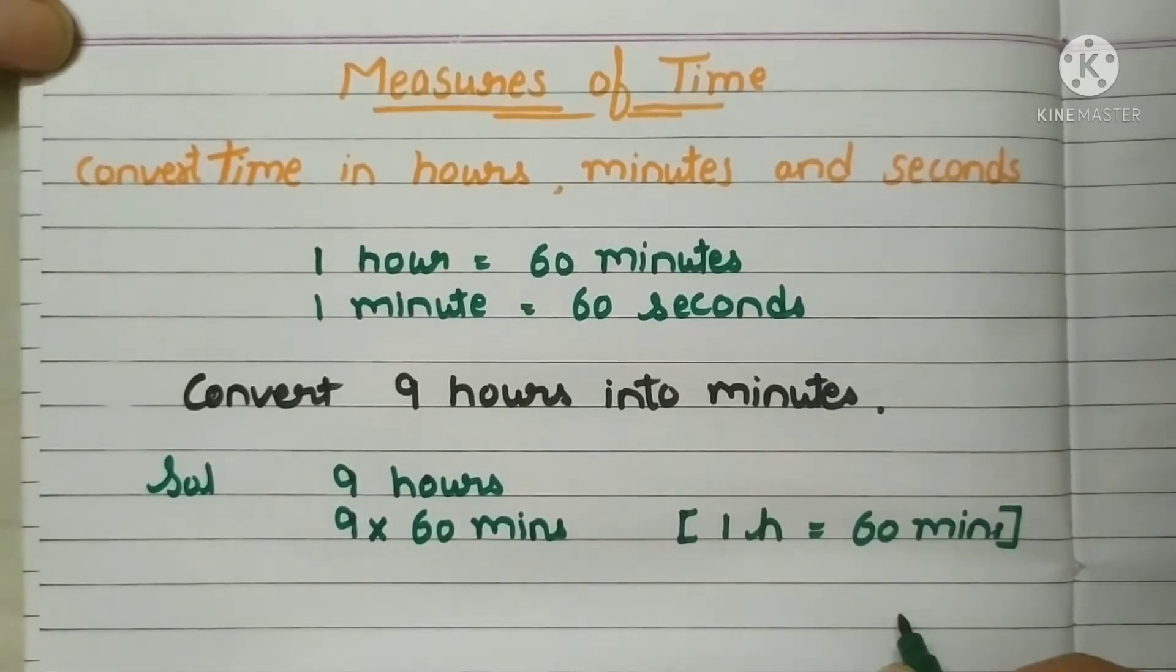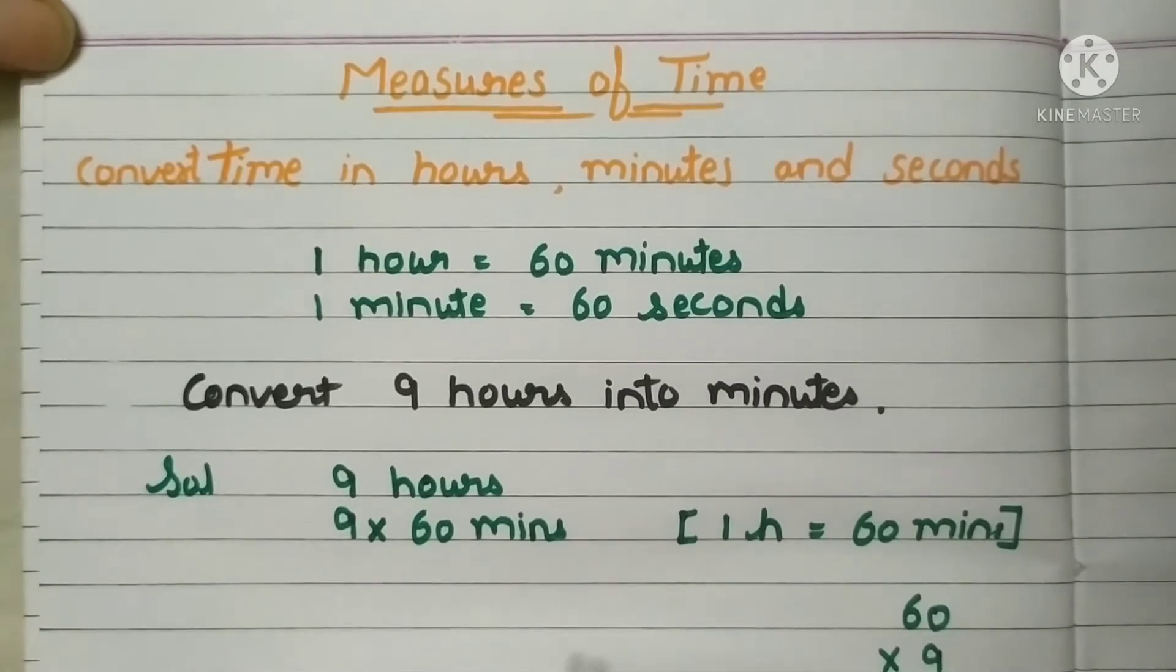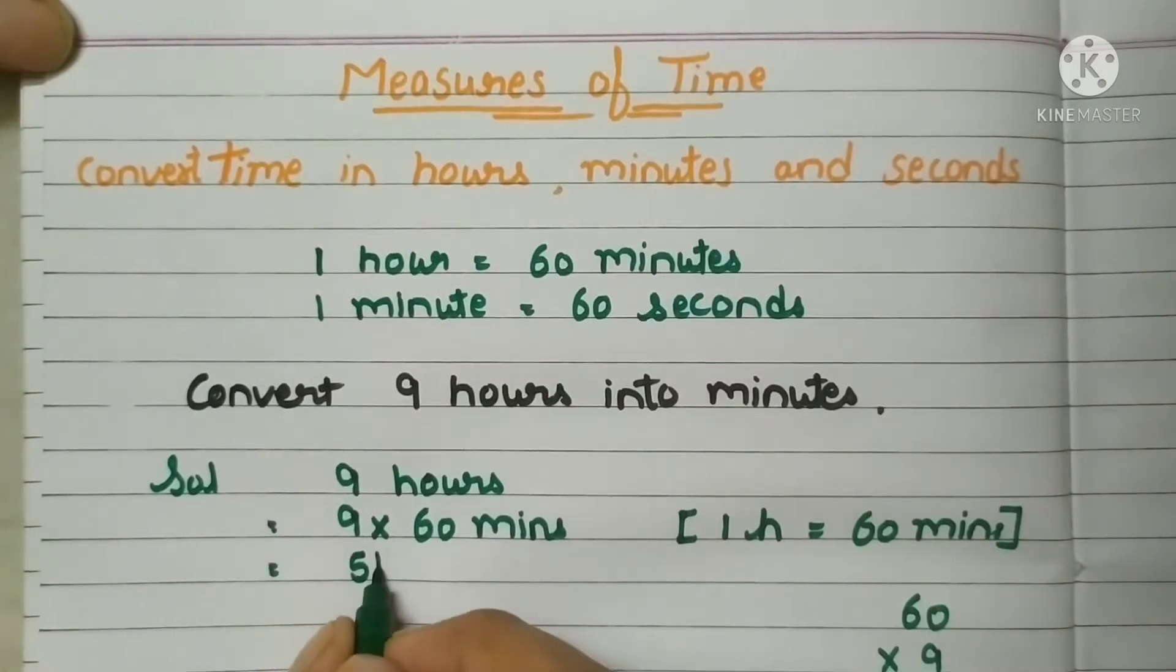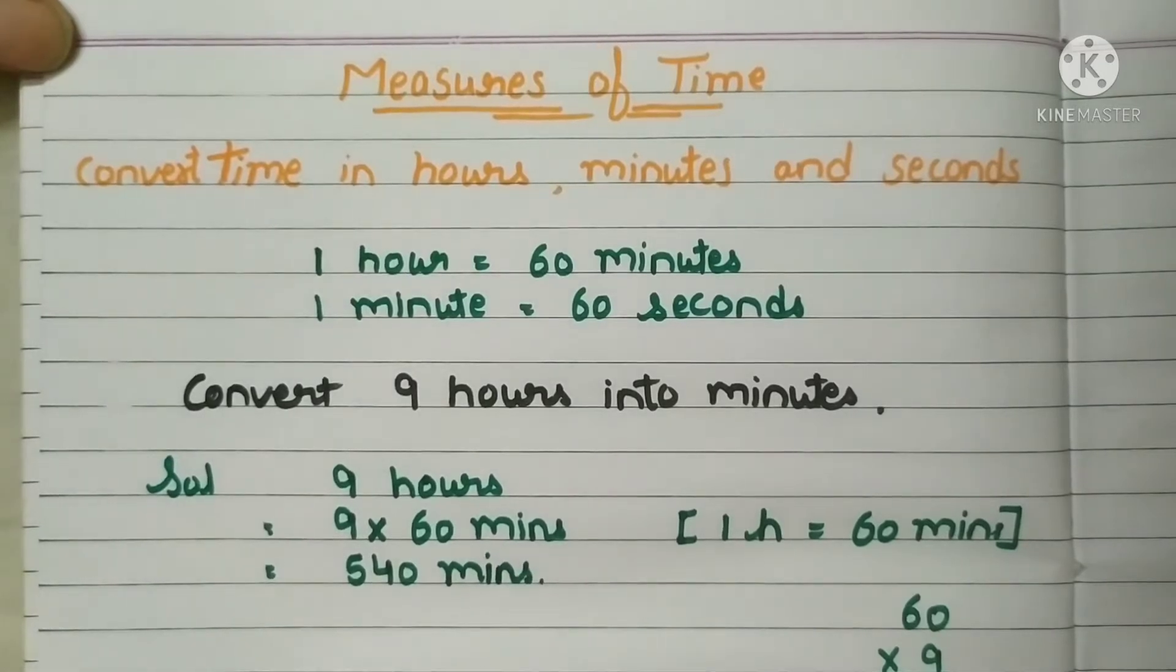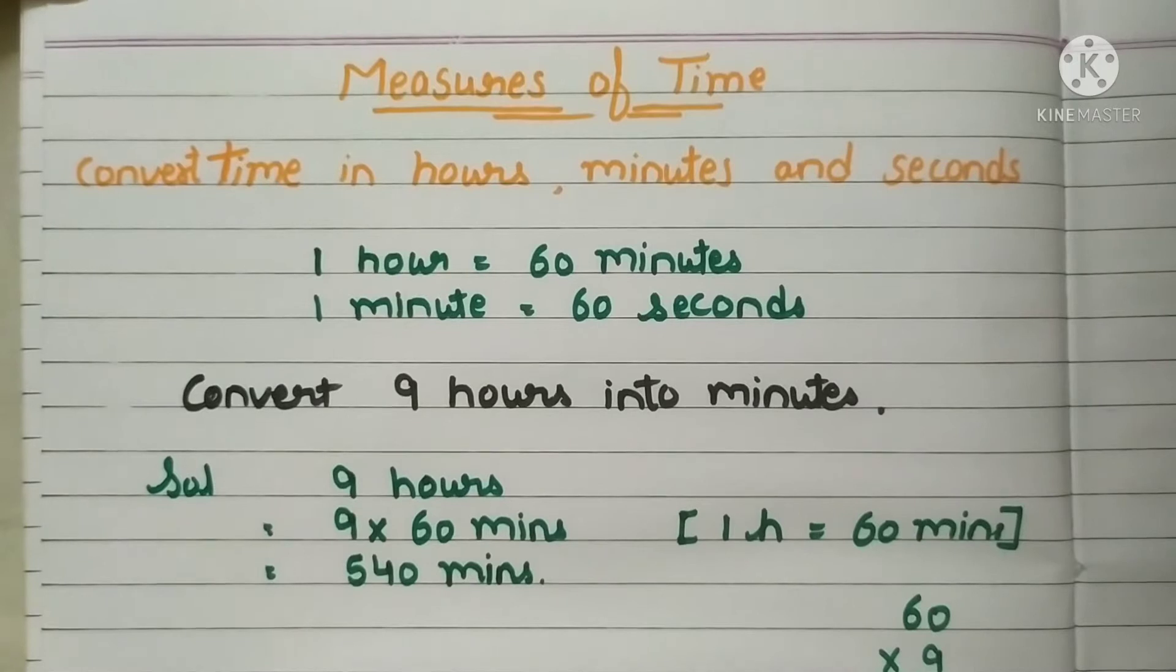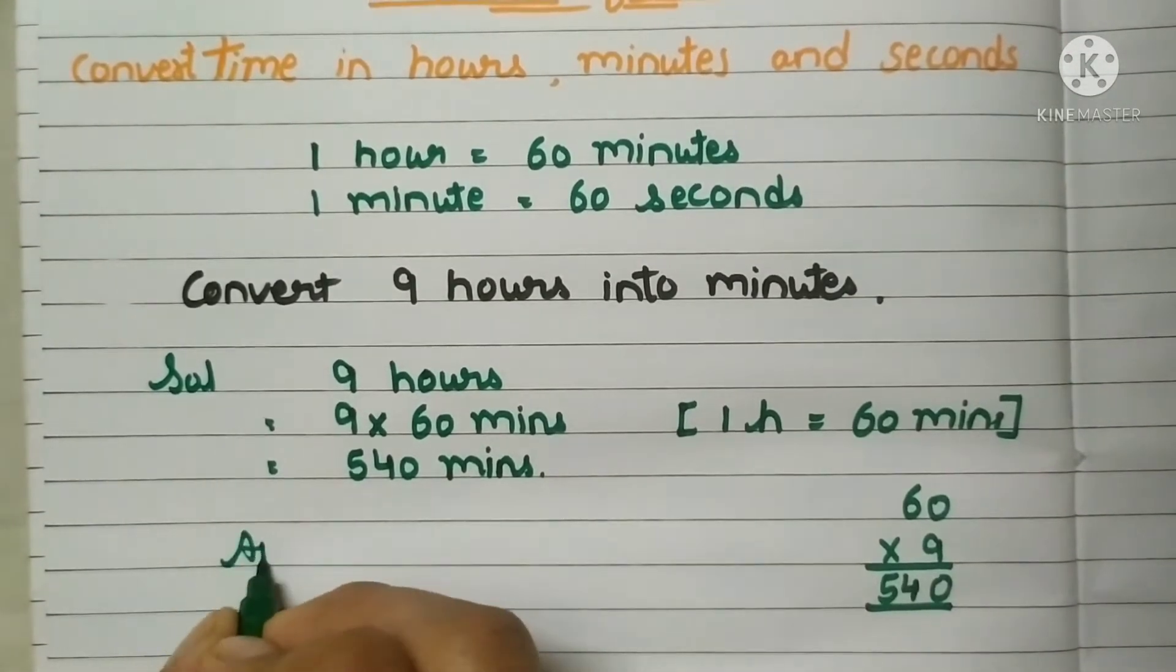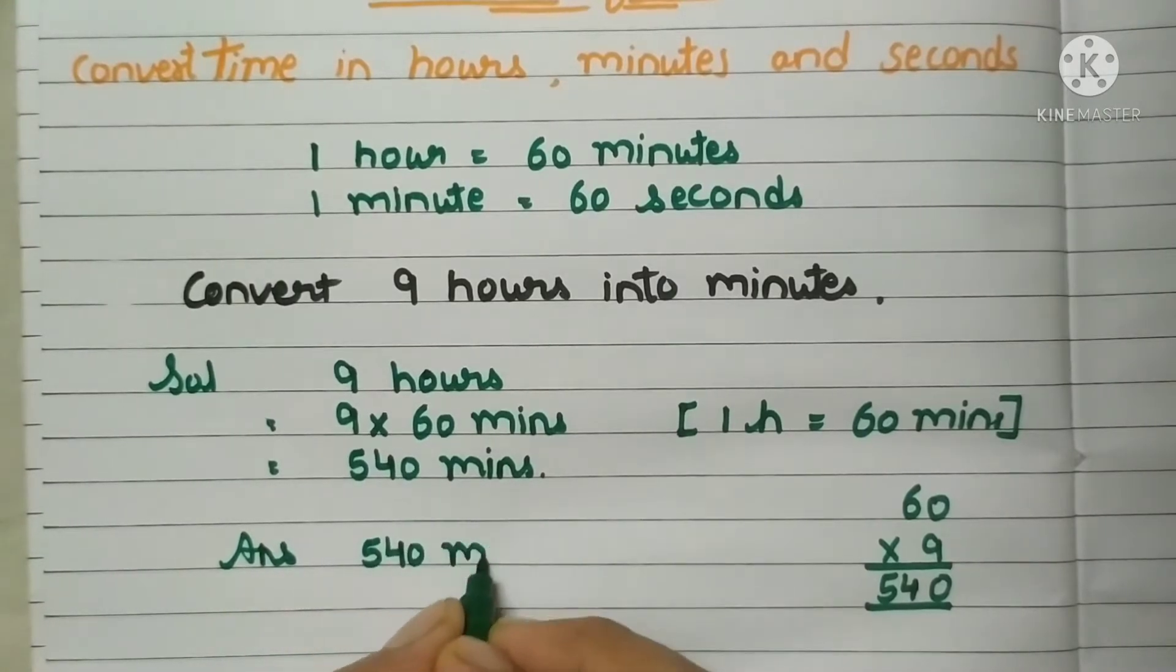So instead of this hours I can write 60 minutes. So now in your rough, do multiplication of this: 60 multiply by 9. 9 zeros are 0 and 9 sixes are 54. So we will get the answer is 540 minutes. Isn't it easy? So what we will do now? We will write down this as an answer.